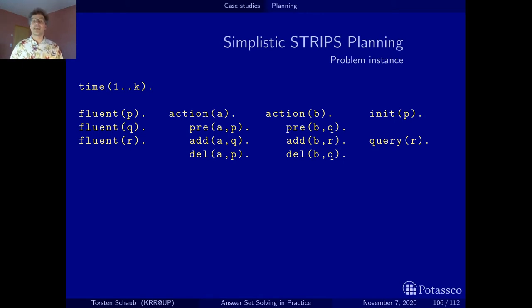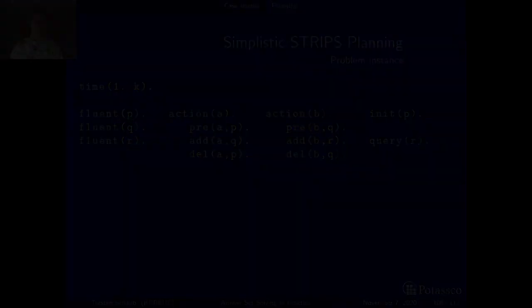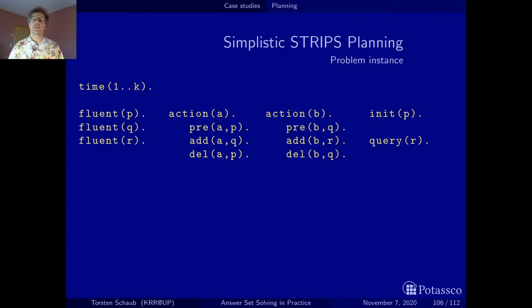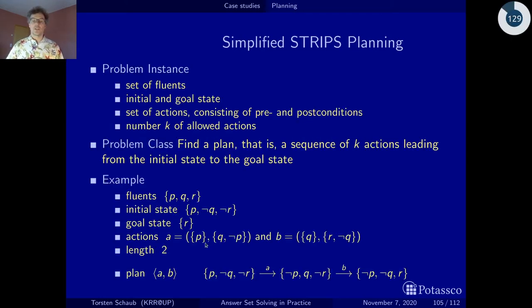Okay, now let's see actually how we can use this problem instance and together with an encoding to find our plan. The key idea of our encoding is to index our fluents p, q and r that change their value over time with the respective time point 1 to k. Actually, this is best explained by going back once more. So, this is actually a trace of our plan. That's our plan. And this is the initial state and I will label this with 0.